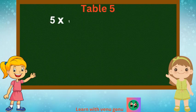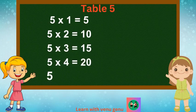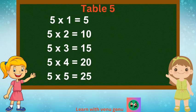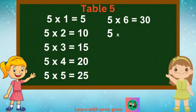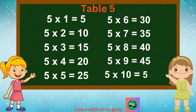5 1s are 5, 5 2s are 10, 5 3s are 15, 5 4s are 20, 5 5s are 25. 5 6s are 30, 5 7s are 35, 5 8s are 40, 5 9s are 45, 5 10s are 50.